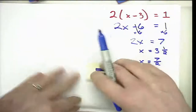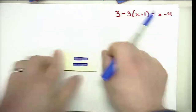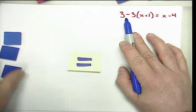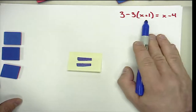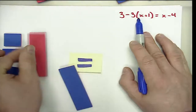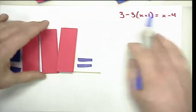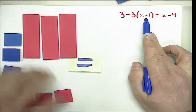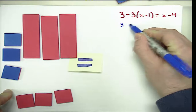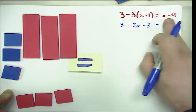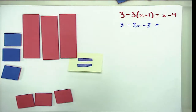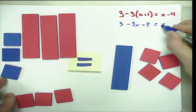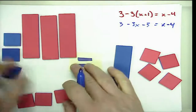In this problem we interpret each term. We start with three positives, then we have the opposite of three groups of X plus one — the opposite of three groups of X is negative three X, and the opposite of three groups of one is negative three. So the left expression is three minus three X minus three, and that is equal to the right expression X minus four.